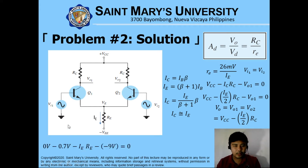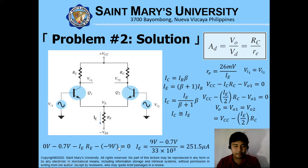Solving for IE: in DC analysis, we should short out the AC supplies. Starting with ground at 0 volts, less the voltage drop across the base-emitter junction is negative 0.7 volts. This current is IE through RE, less the negative VEE, is equivalent to 0. Solving for IE: (9 volts minus 0.7 volts) divided by 33 times 10 to the 3, equals 251.5 microamperes. This IE can be substituted directly in order to solve for VO.